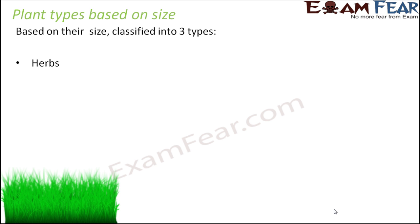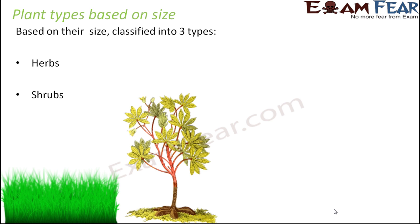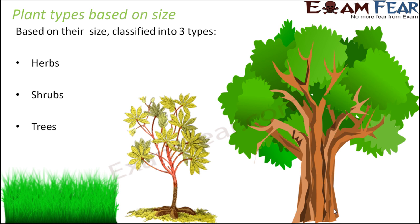Herbs are those plants which are very small in size. The best example is grass. The second type is shrubs — medium sized plants, neither too small nor too big. One example is the rose plant. The third type is trees, which are very big in size. The banyan tree and the peepal tree are examples of trees. So herbs, shrubs, and trees are the three types of plants based on their sizes.